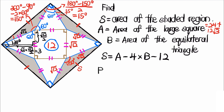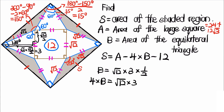So B equals the base √12 times the height 3 times one-half. Therefore 4B equals 4 times √12 times 3 times one-half, which equals 6 times √12.